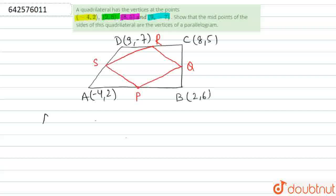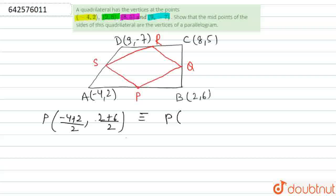Since P, Q, R, S are the midpoints of the respective sides, we can easily find their coordinates. Coordinates of P will be, since P is the midpoint of AB: ((-4 + 2)/2, (2 + 6)/2), which equals (-1, 4).